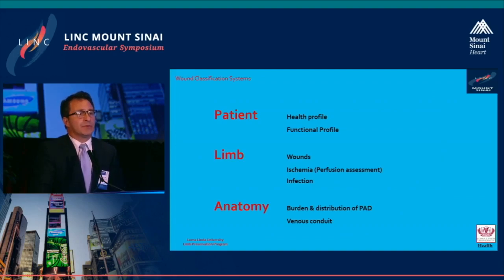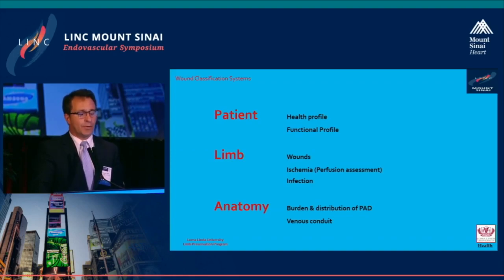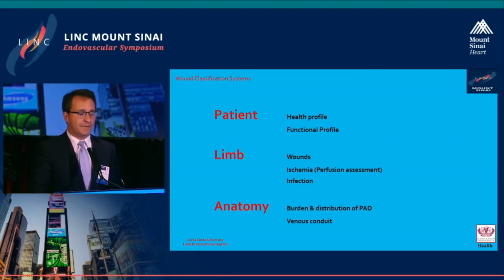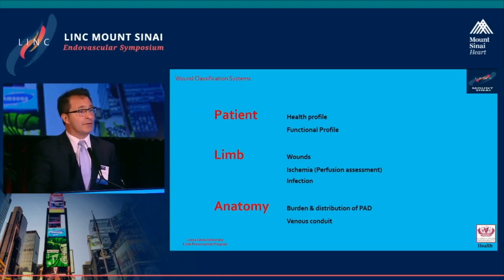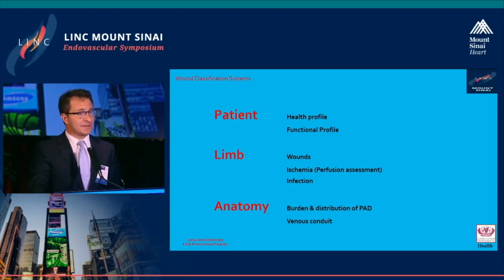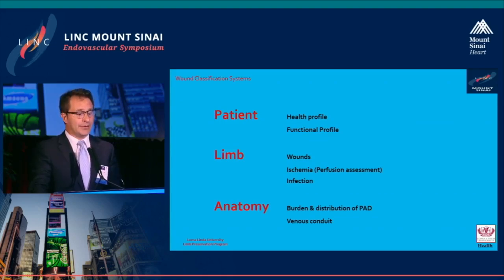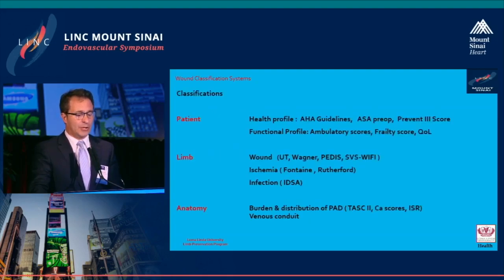We approach patients with wounds and vascular insufficiency in three dimensions. The patient dimension uses health profiles and functional outcomes to stratify patient risk and benefit. From the limb perspective, we look at the wound, the ischemia, and the burden of infection — present or absent. We also look at the anatomy in selected patients we choose to intervene, distributing that anatomy based on patterns and whether or not a venous conduit is available.